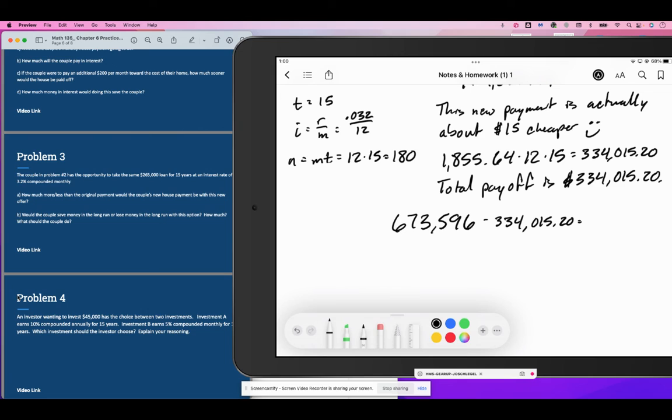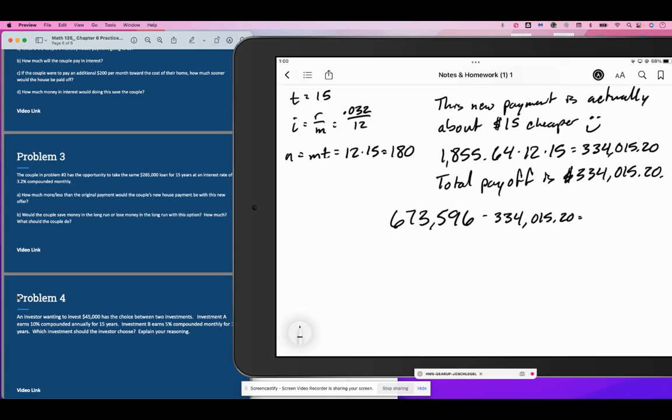I hope this is meaningful and valuable to you. This is a giant slice of life right here. So $673,596 minus $334,015.20. The couple would save $339,580.80 doing this.